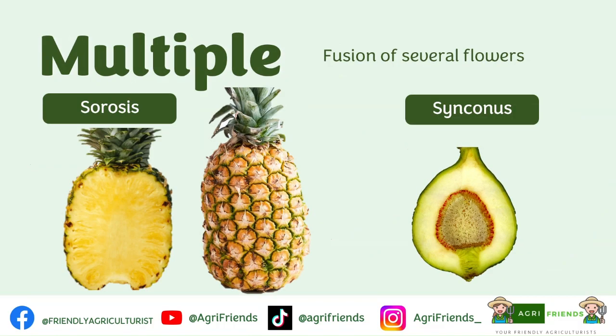For multiple fruits, the fruits are formed from several flowers that fuse to form a mass. There are two types of multiple fruits: sorosis and syconus. An example of sorosis is pineapple — each eye represents an individual fruit attached to the receptacle. In the syconus type, the fleshy receptacle or rachis of the inflorescence becomes succulent and encloses the minute achenes. An example is ficus.